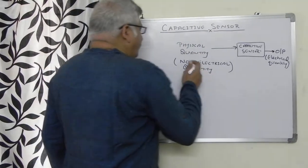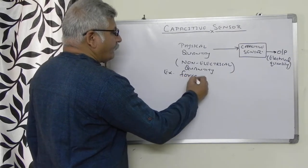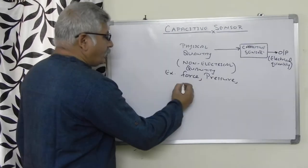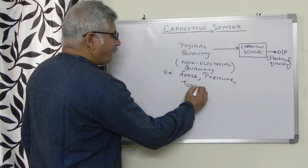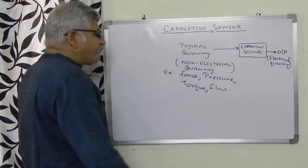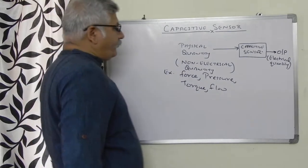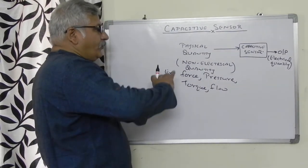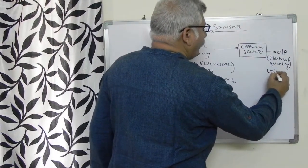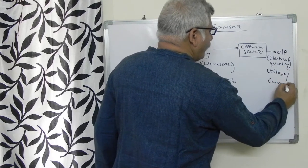Examples of non-electrical quantities are force, pressure, torque, and flow. These are few examples of non-electrical quantities which are converted into electrical quantities in the form of voltage or current.